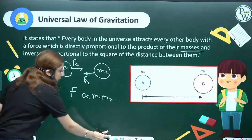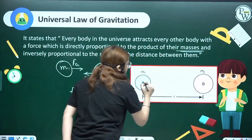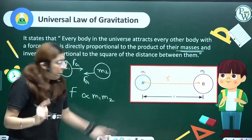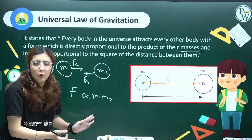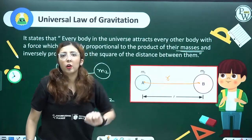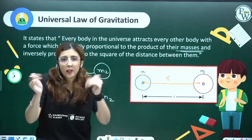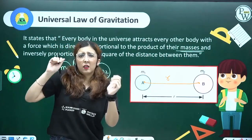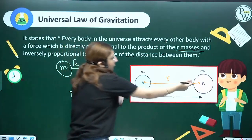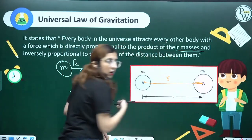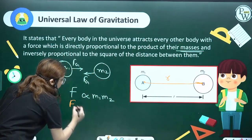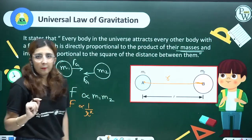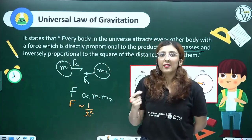The force of gravitation depends on the distance as well. You might ask why we take distance from the center — we cannot take it from the surface or mix surface and center measurements. To avoid any confusion, we always take the distance from the center of the bodies. So the force of gravitation depends upon the inverse of the square of the distance between the two bodies.